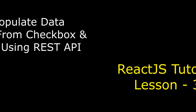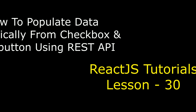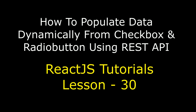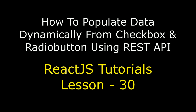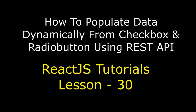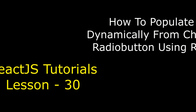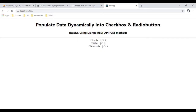Hello friends, welcome to my channel. This is Cheren. This is a React.js video tutorial series. In this video tutorial I will explain using Django REST framework GET method how to bind data dynamically into checkbox and radio button elements. Here we got the final output of our React.js application — populating data dynamically into a checkbox and radio button using Django REST API GET method.